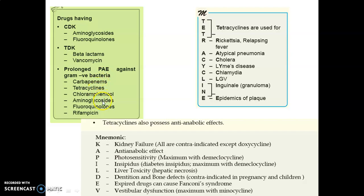For tetracyclines, remember the mnemonic TETRACYCLINE: T — tetracycline; R — Rickettsia or relapsing fever; A — atypical pneumonia; C — cholera; L — Lyme disease; C — Chlamydia; L — LGV (lymphogranuloma venereum); I — inguinal; E — epidemic typhus.